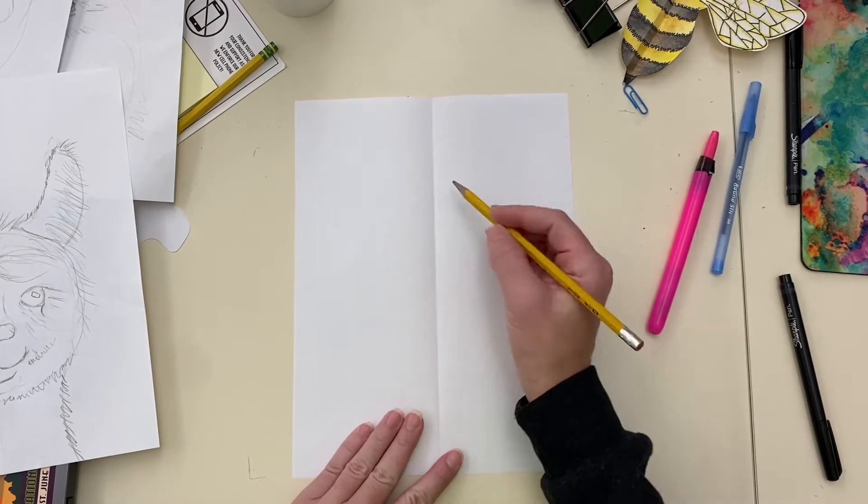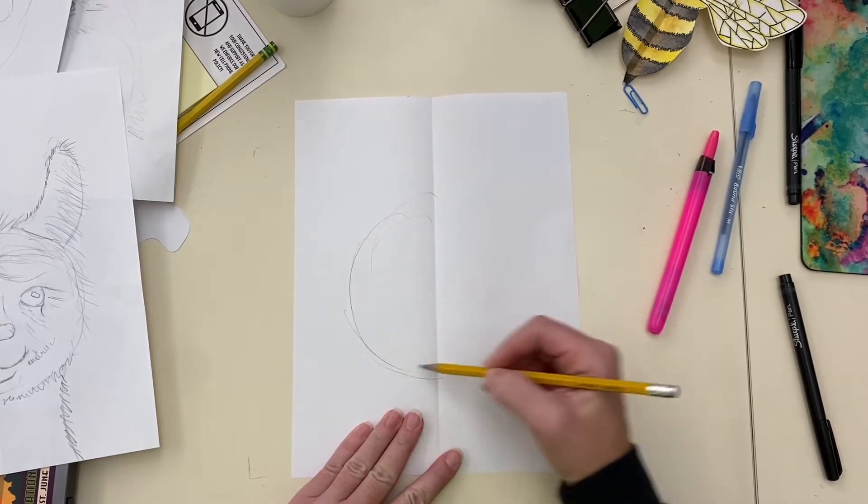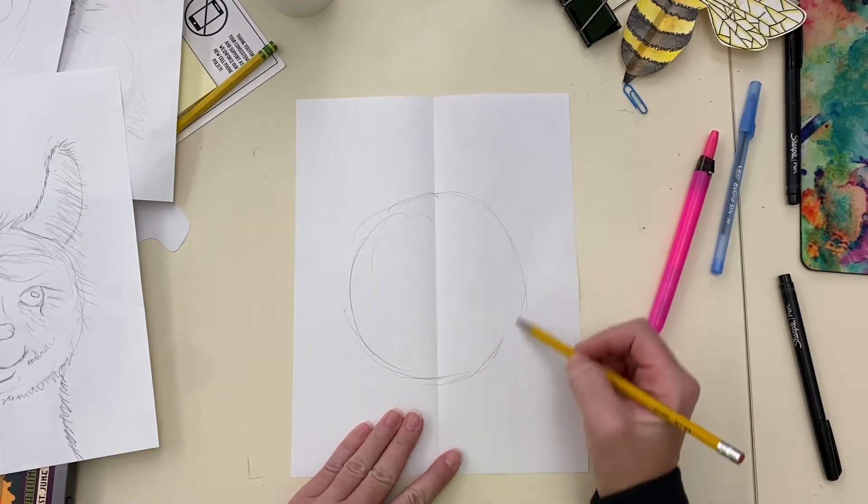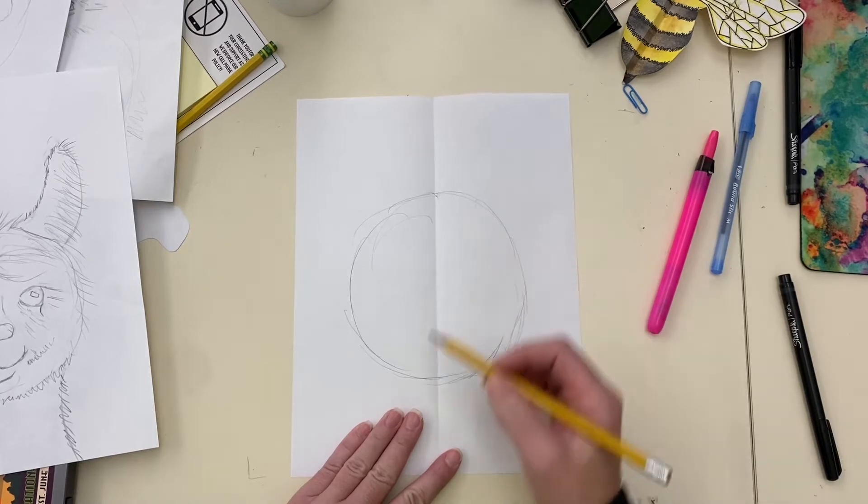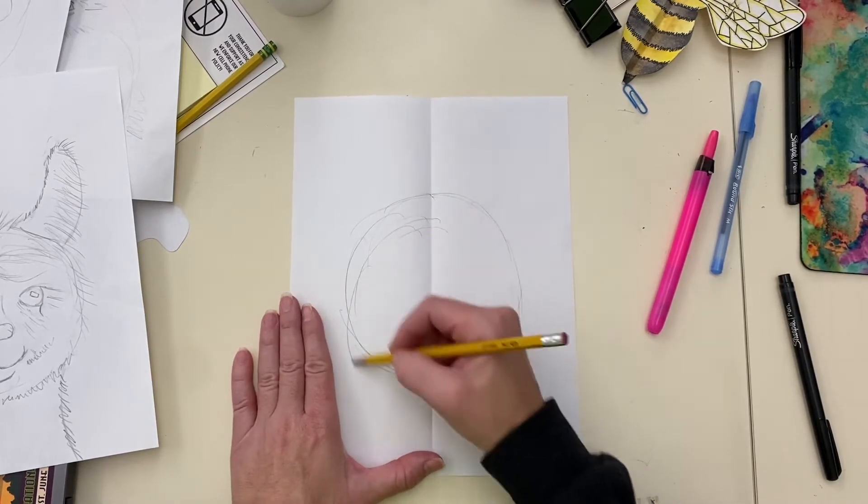The first part of this is you want to do just a general shape. So you're going to do, I call these sketchy lines because I'm just trying to get the shape of the animal and I didn't draw it down enough. I'm going to put it down further on the paper.